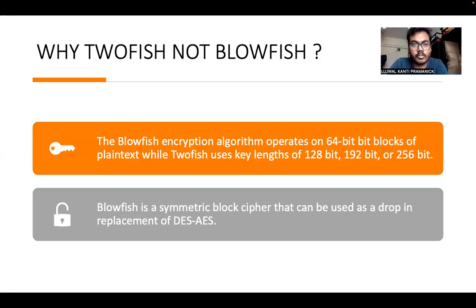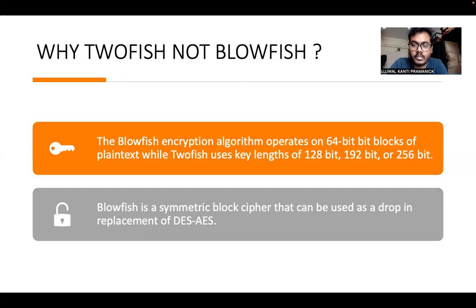Why should we go for TwoFish instead of Blowfish? The problem with Blowfish is that it is a 64-bit algorithm, but TwoFish supports 128-bit, 192-bit, or 256-bit key sizes. As we know, more bits means more security, so hackers cannot decrypt it using a brute force attack.